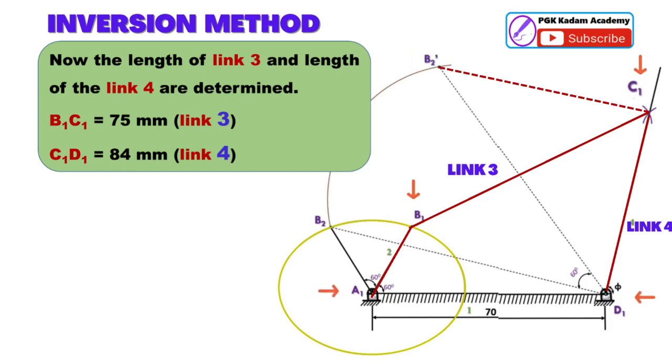Length of link 3, link B1C1, is equal to 75 millimeters. And length of link 4, link C1D1, is equal to 84 millimeters. So these are the steps for solving two position synthesis of a four-bar mechanism using the inversion method.